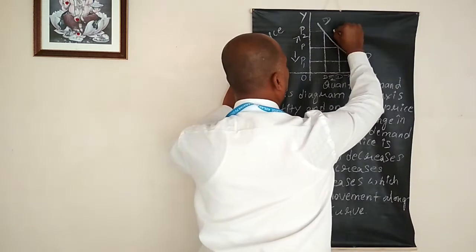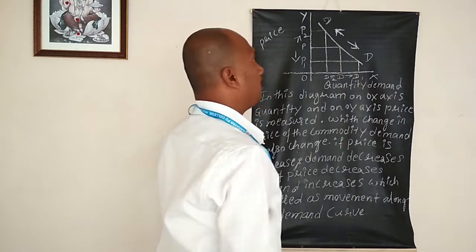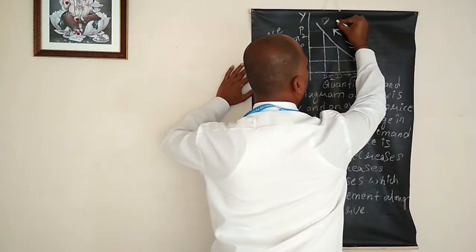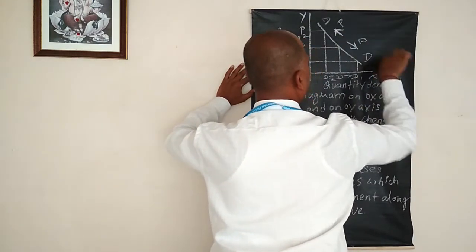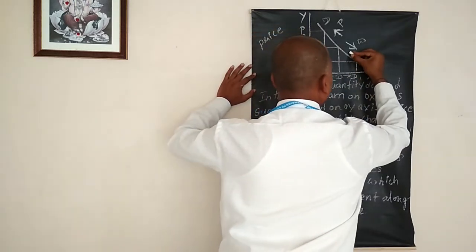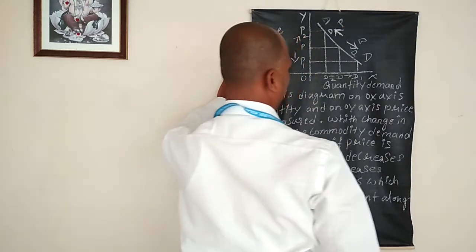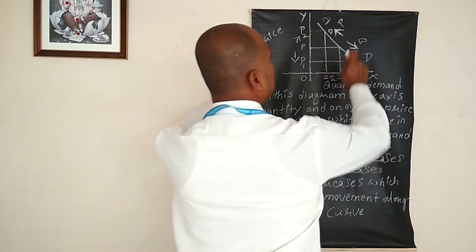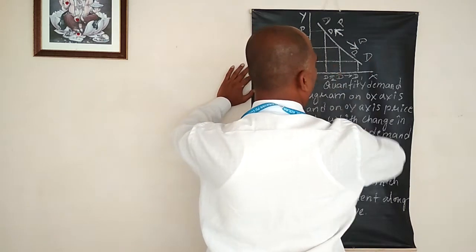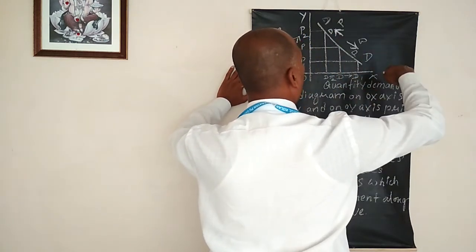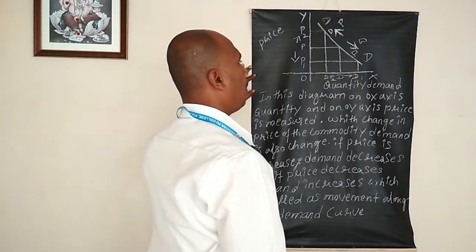The demand curve takes movement upward or downward. When price increases, demand decreases. On the other hand, when price decreases, demand increases. Changes in the price lead to changes in the demand, so the demand curve takes movement either upward or downward.